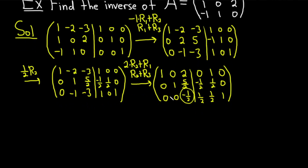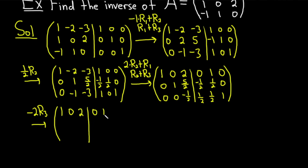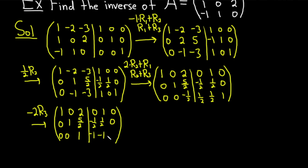Now we need to make this bottom pivot entry a 1. We can multiply the entire third row by negative 2 to accomplish that. Keeping the first row: 1, 0, 2 | 0, 1, 0. Keeping the second row: 0, 1, 5/2 | negative 1/2, 1/2, 0. Multiplying the bottom row by negative 2: the first two entries are 0; negative 2 times negative 1/2 is 1; and then negative 1, negative 1, negative 2.